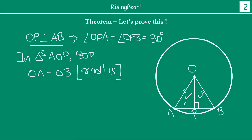Also, we notice that angle OAP will be equal to angle OBP. For this, forget about the perpendicular for a moment and think about triangle OAB. In that triangle, OA equals OB. From Series 7, we learned that angles opposite to equal sides are equal. So in triangle OAB, since OA equals OB, the angles opposite to those equal sides are equal.